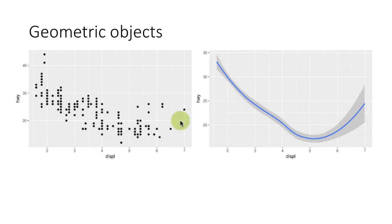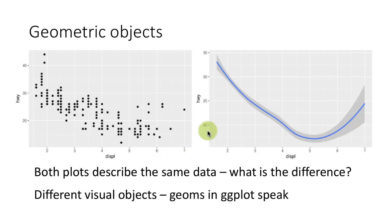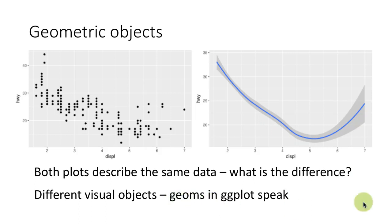So this is the same data, but what we are visually seeing is quite different. Both plots describe the same data, but the difference is that we are using different visual objects to display it. In ggplot speak, these visual objects are called geoms, short for geometry.